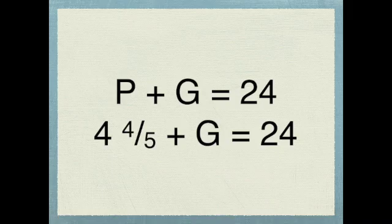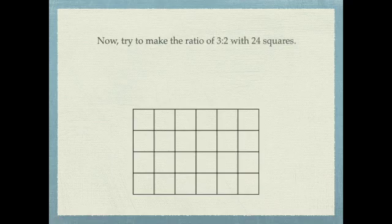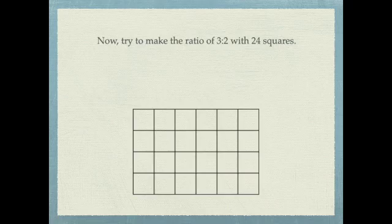I bet you're clever enough to figure out how much the green is. Now I want you to try to make a ratio of 3 to 2 with 24 squares, and you're going to notice that 3 to 2 also makes 5, just like 4 to 1 makes 5.